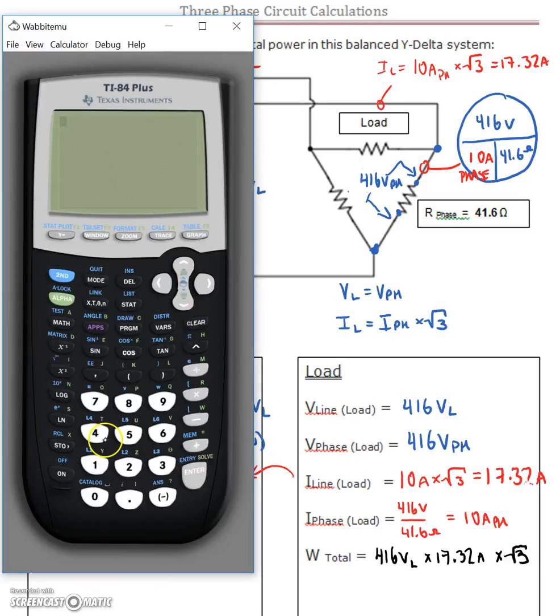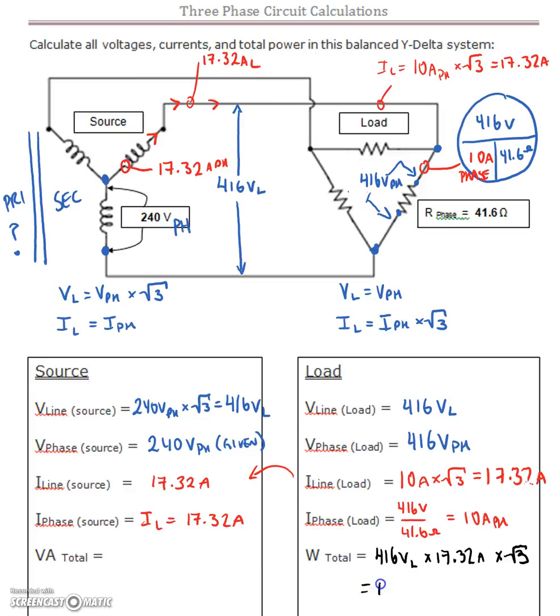So what do we got? We got 416 times our 17.32 times the square root of 3. That gives us 12,479.63. And again, that's in watts, because all we have are resistors there.